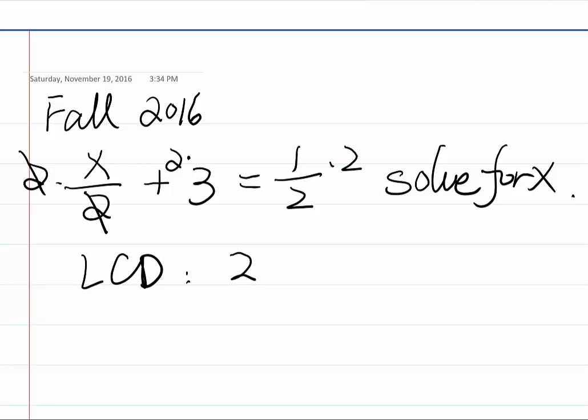3 times 2 will be 6. And 2 times a half, cancels out. Now we have a new equation.